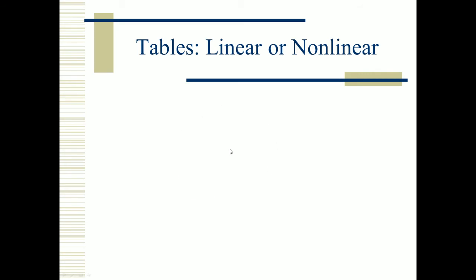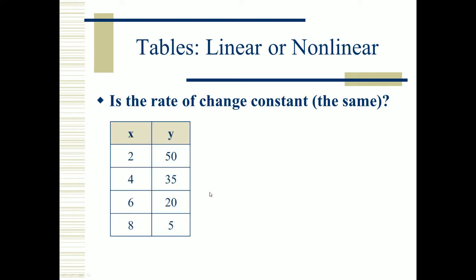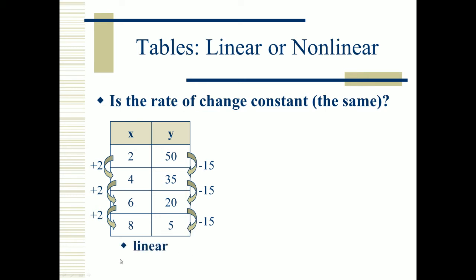On the table, we can see this by asking the question: is the rate of change constant? Take a look at this chart. X is growing by adding 2 each time — 2 to 4, 4 to 6, and so on — so X is changing at a constant rate. Likewise, Y is changing by subtracting 15 constantly. We call this linear because the rate of change is constant.